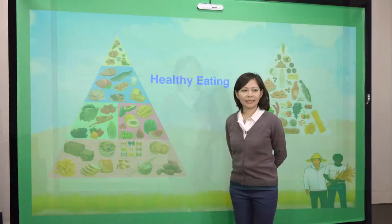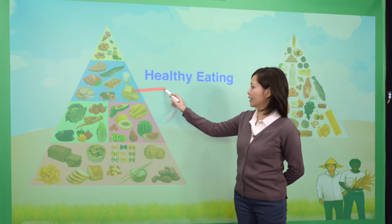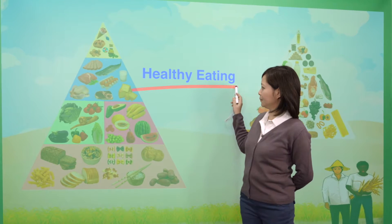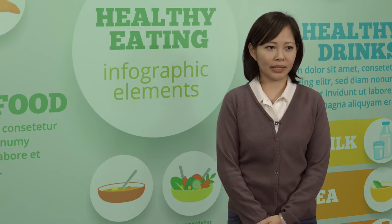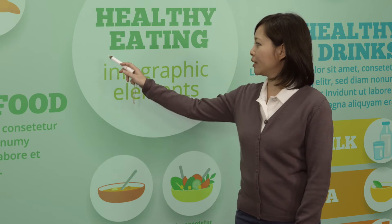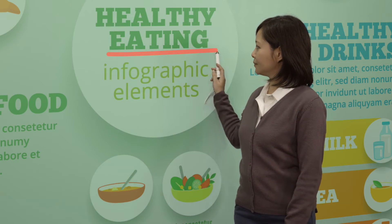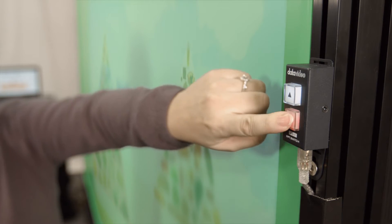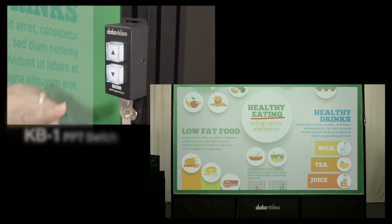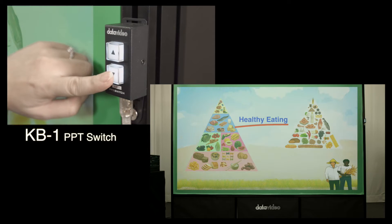By using the electronic interactive pen, the user will then be able to write main points directly on the projected image, or just press the change button to quickly flip pages.